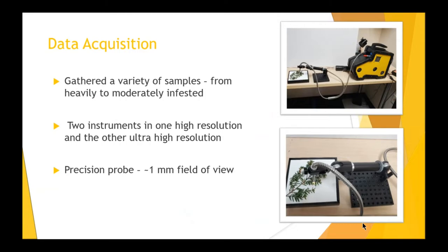The instrument used in the analysis was Spectral Evolution's SR6500, shown in the right-side photo in yellow. The instrument is unique in that it is the highest resolution field operational spectral radiometer on the market, with a spectral resolution of 1.5 nanometers for the UV-vis, 3 nanometers for SWIR1, and 3.8 nanometers for SWIR2. The spectral range is from 350 to 2500 nanometers, measuring every nanometer along the way.